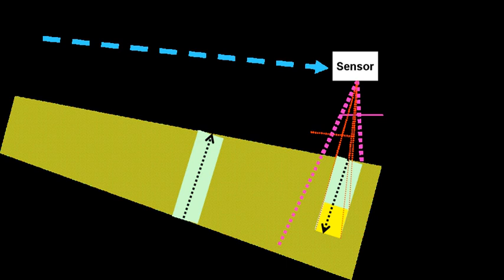Measurement and Signature Intelligence is a technical branch of intelligence gathering, which serves to detect, track, identify or describe the signatures distinctive characteristics of fixed or dynamic target sources. This often includes radar intelligence, acoustic intelligence, nuclear intelligence, and chemical and biological intelligence.